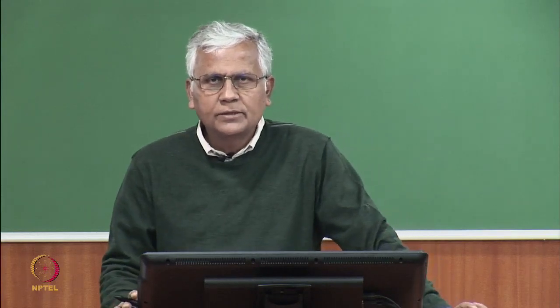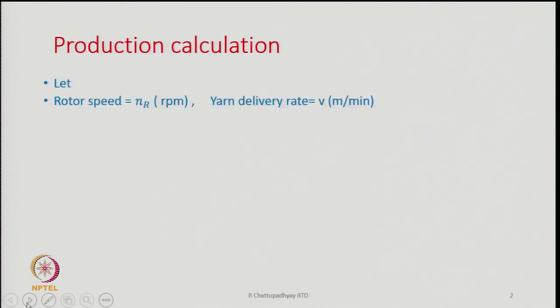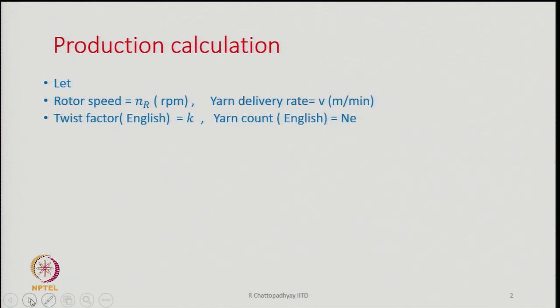Today's topic is Production and Energy Consumption Calculations. Let us see how we calculate production in a Rotor Spinning Machine. Let rotor speed be n_r in rpm, the yarn delivery rate be V meters per minute, the twist factor in English system be K, and the yarn count in English system be N_E. These are the parameters which are given.